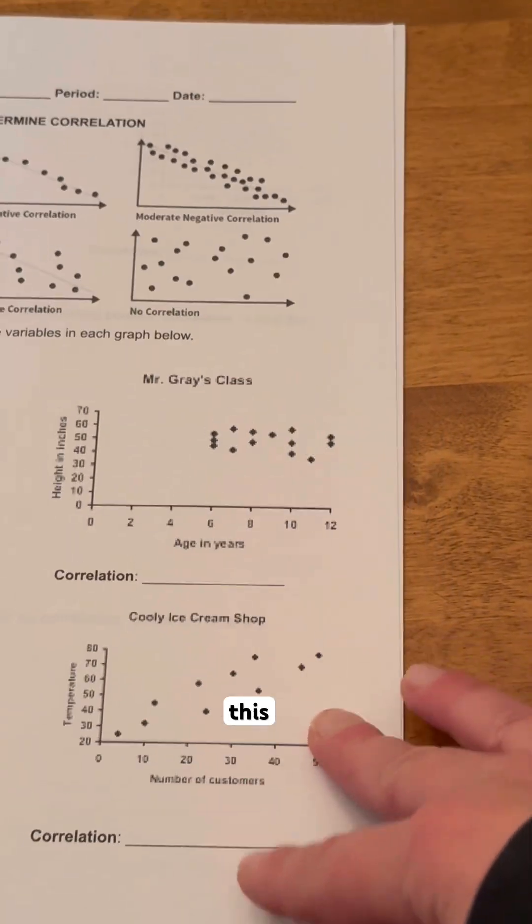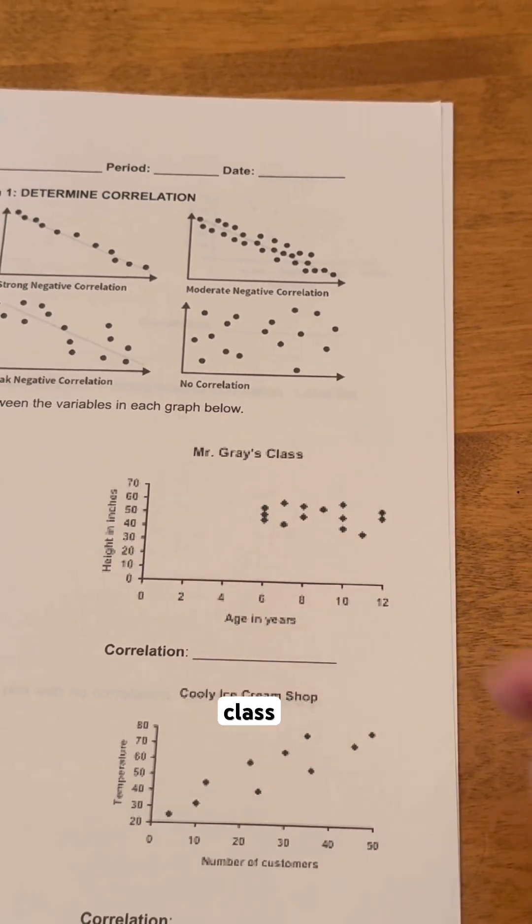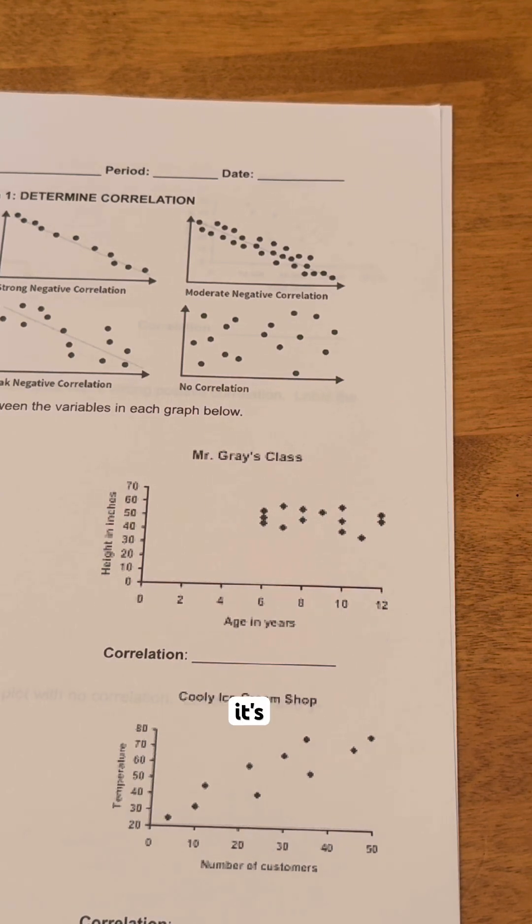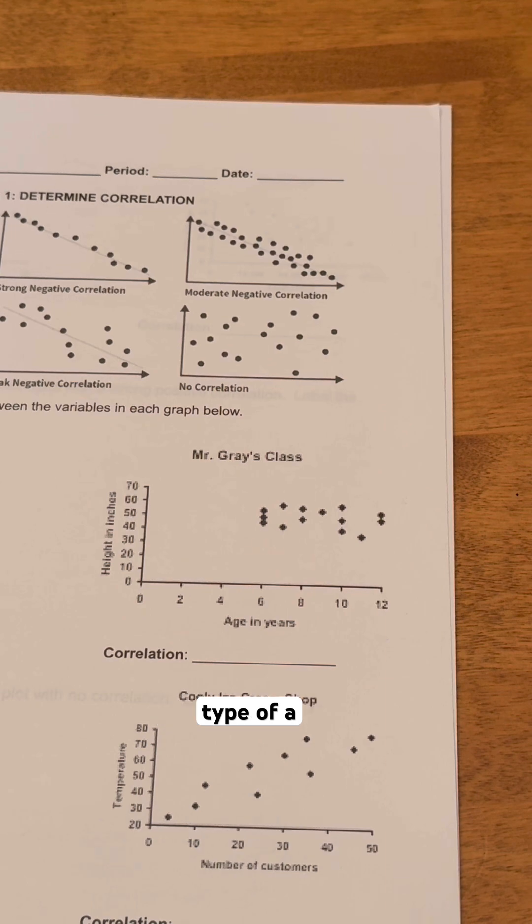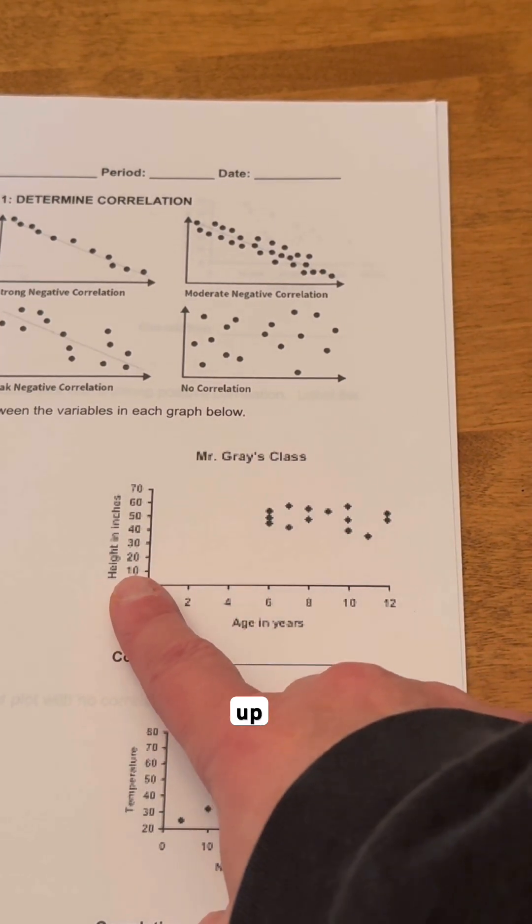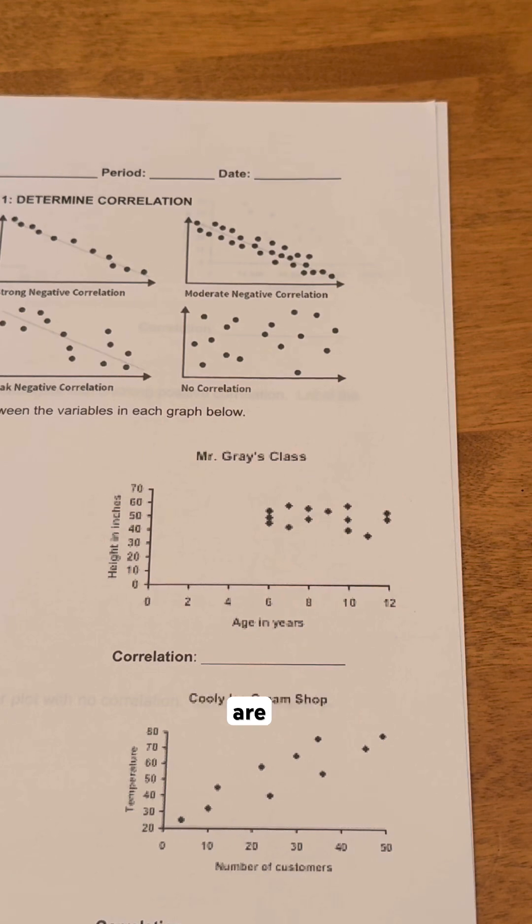Now we take a look at this next one here. We can see Mr. Gray's class. We see that it's kind of bunched together. It's definitely strong, but it's more of a neutral type of correlation because as the age in years is going up, the heights in the class are pretty much staying very neutral. So I would say a strong neutral, but it also could be really no correlation in that case if the age is not really corresponding to the heights of these people in this class.